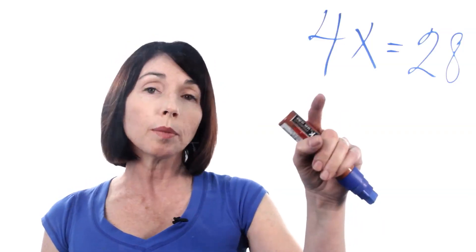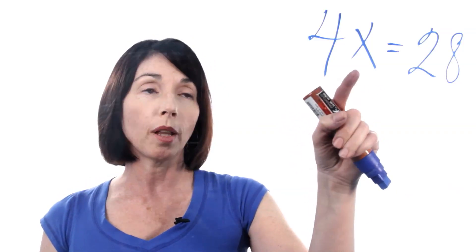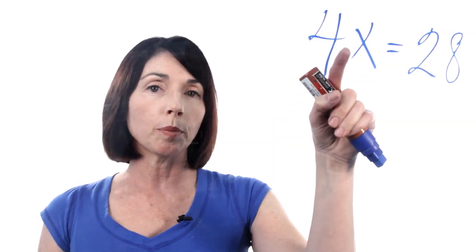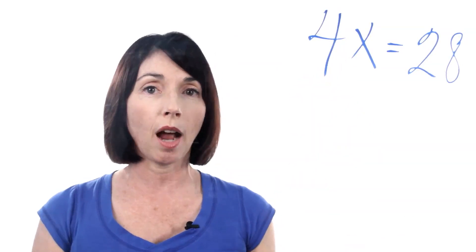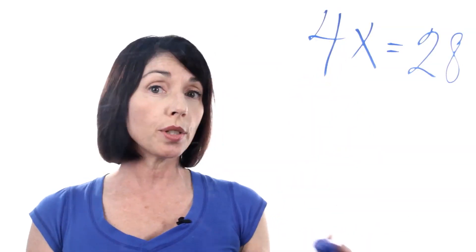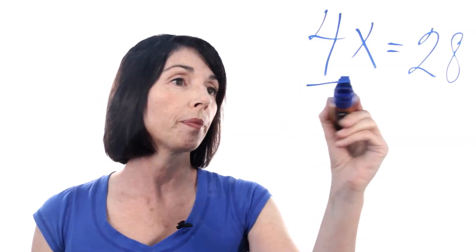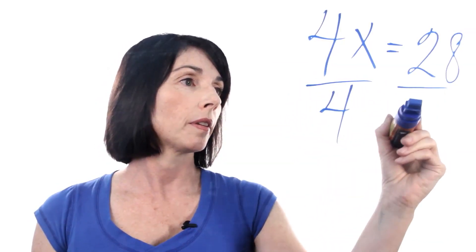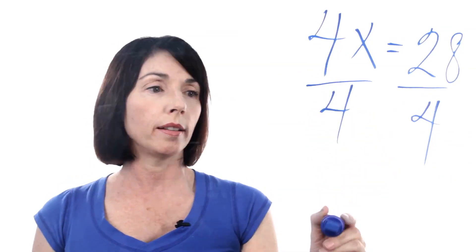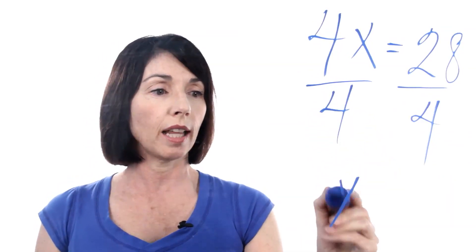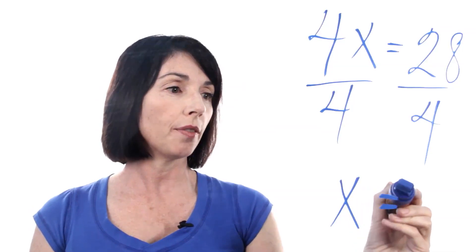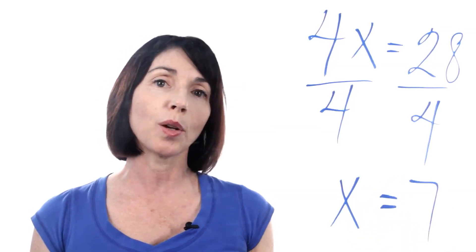In this case, we're multiplying the variable x by the number 4. Since we're doing multiplication, we'll do the complementary operation, which is division. So if we divide both sides of this equation by 4, 4 divided by 4 is just 1, so we're left with an x. 28 divided by 4 is 7, so we're left with x equals 7.